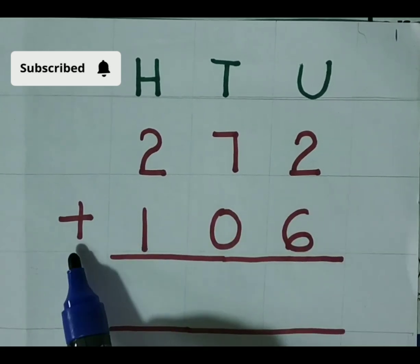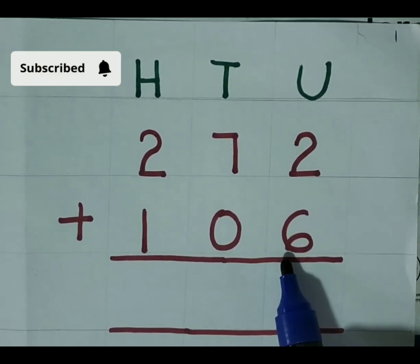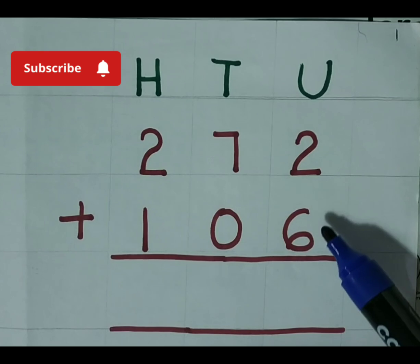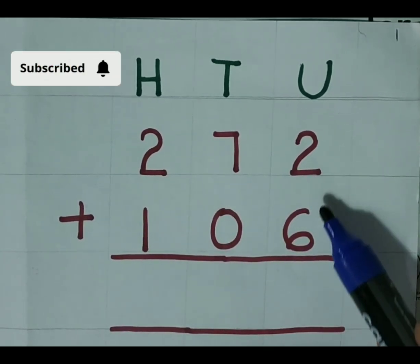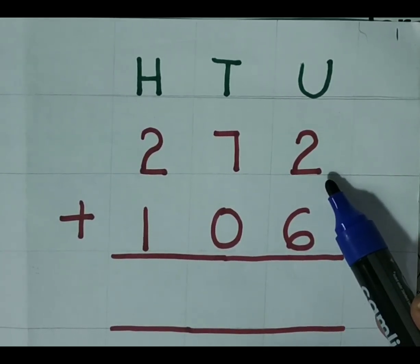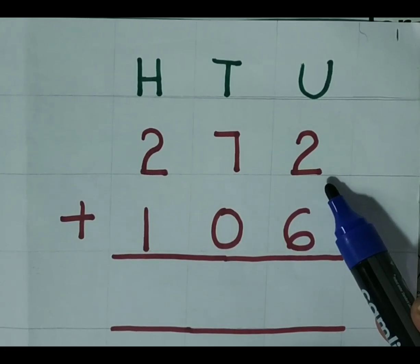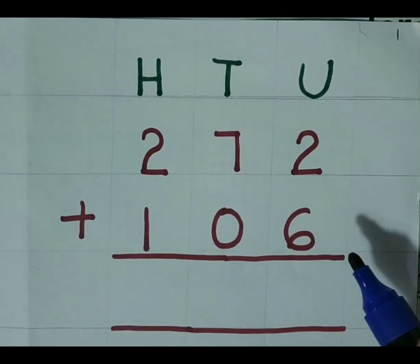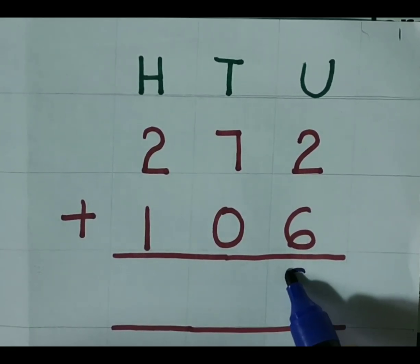272 plus 106. Start from unit place. 2 plus 6. 2, keep in mind, show the 6 fingers and count forward. So, we will get 2 plus 6 is 8.